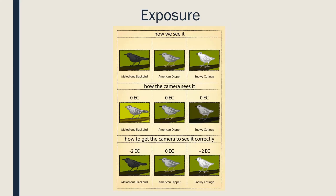Here's an oversimplified example: imagine a very black bird, a medium-toned bird, and a very white bird on a neutral background. The camera's meter always tries to average out the scene, so the black bird may be washed out, the medium-toned bird will be fine, and the white bird might look light gray. Just like shooting a snowy landscape — it looks light gray unless you add exposure. So with birds, you sometimes have to give the camera input based on what you're looking at.